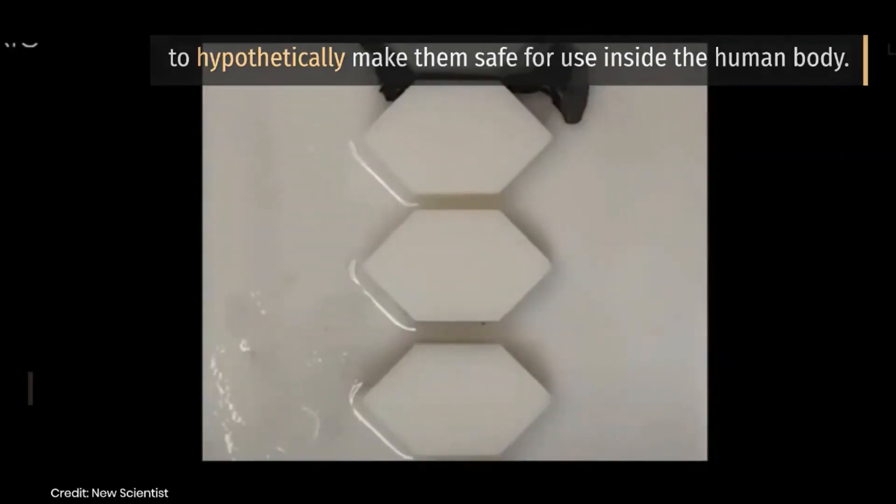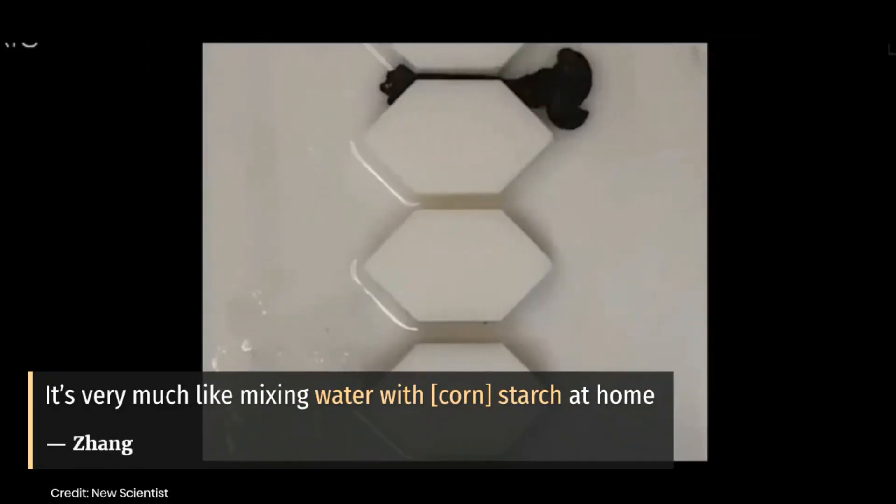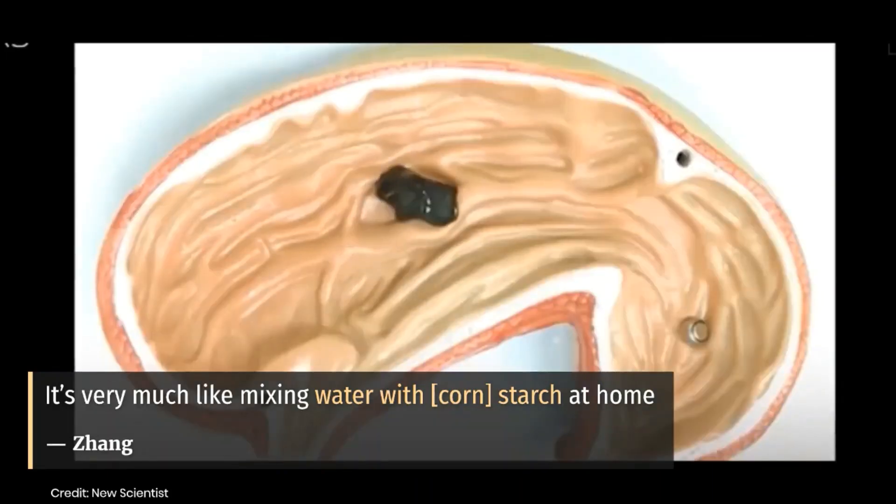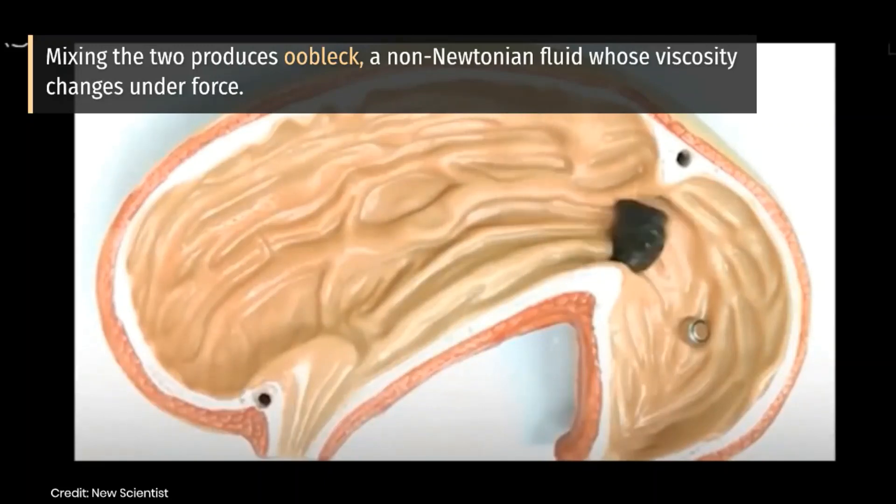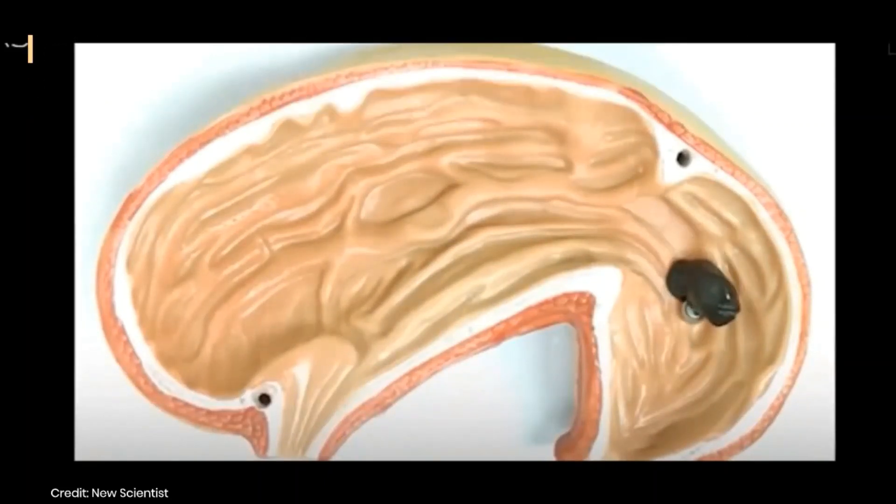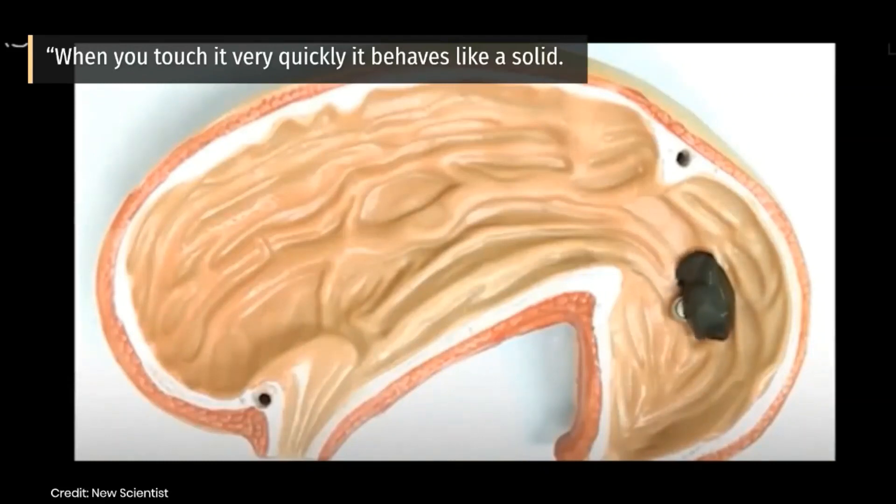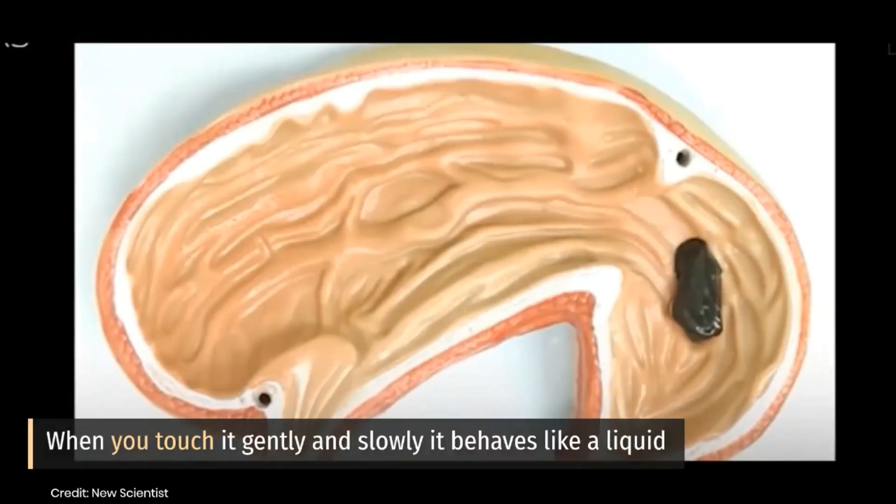It's very much like mixing water with corn starch at home, Jang said. Mixing the two produces oobleck, a non-Newtonian fluid whose viscosity changes under force. When you touch it very quickly it behaves like a solid; when you touch it gently and slowly it behaves like a liquid.